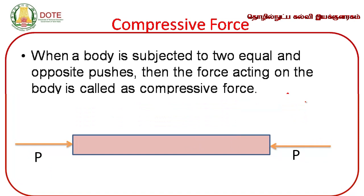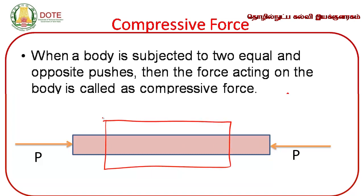Compressive force: here we replace the pulls by means of pushes. When a body is subjected to two equal and opposite pushes, it is called compressive force. The result is that the length of the object is reduced and the object is compressed, so the diameter increases but length decreases.